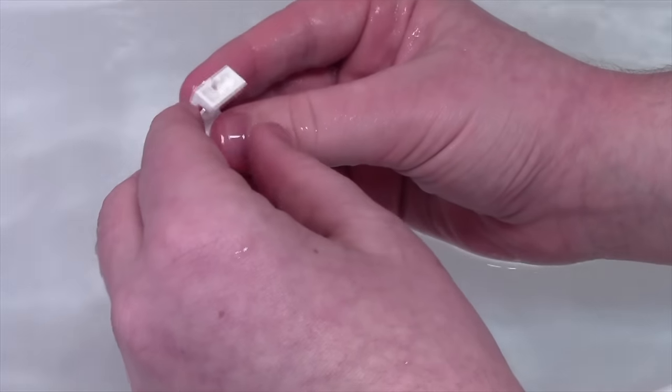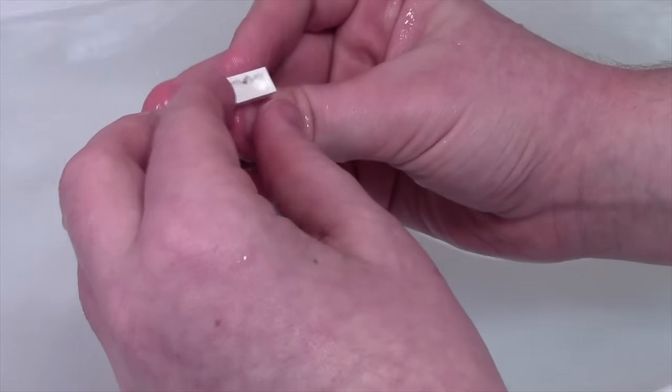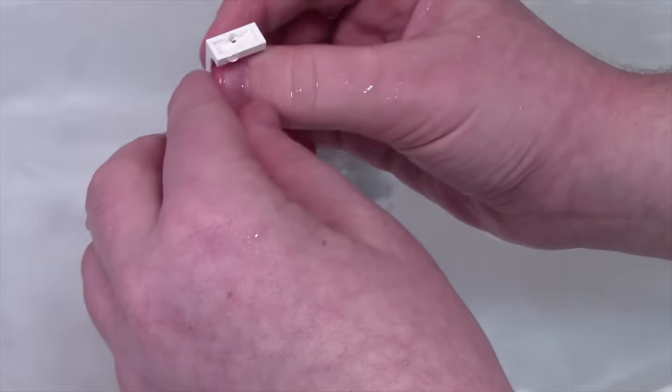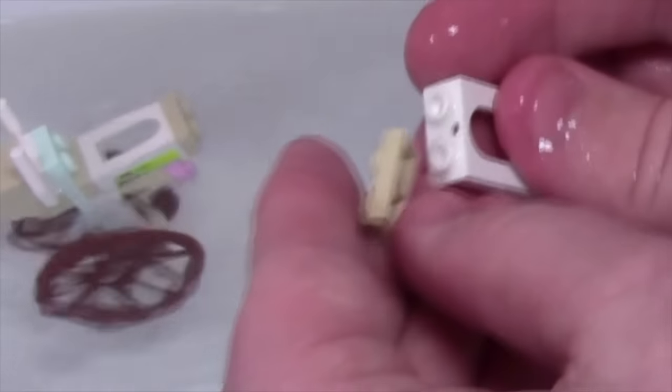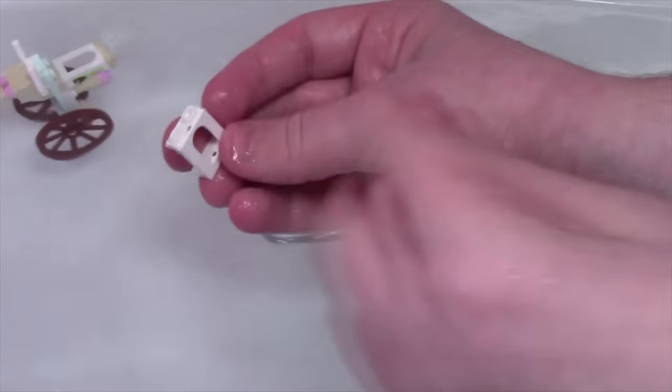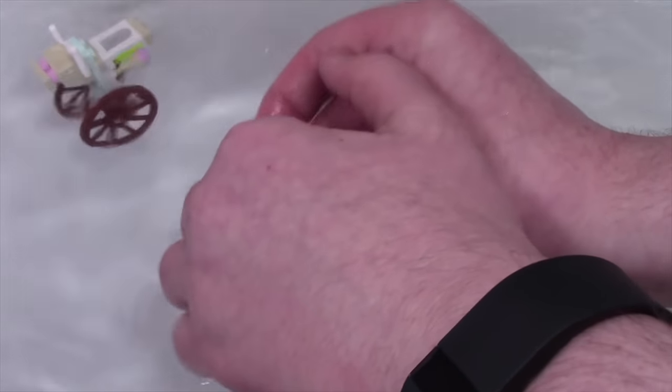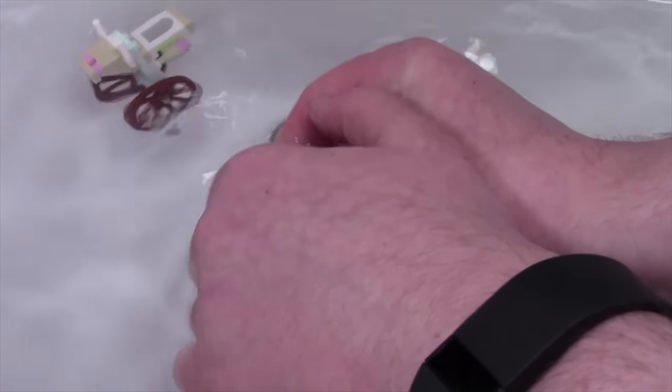These window pieces come off super easy. A little glue residue in there, but I'm just going to wash that out and it's already gone. So again, take it off here. There's like no glue residue, just a little left on the window piece, and I'm just going to scrub that off with my fingers.